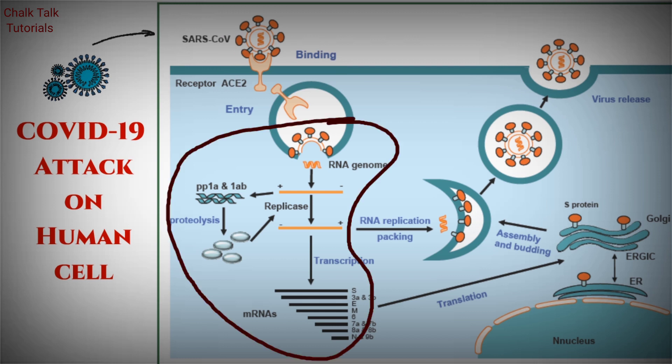This RNA takes over the machinery of the human cell to produce exact copies of its RNA genome, and it also produces different proteins which are present in coronavirus — that is spike proteins and nucleoproteins.